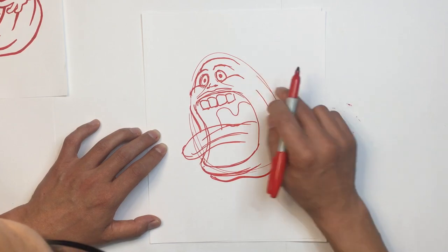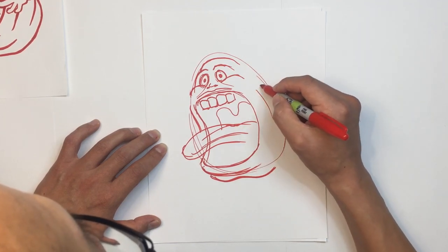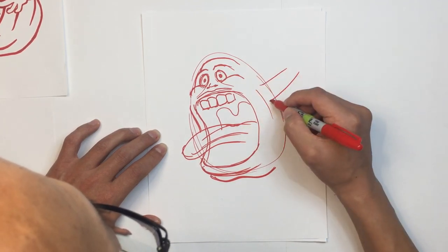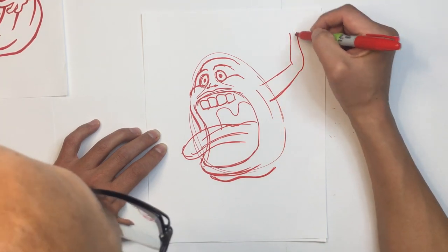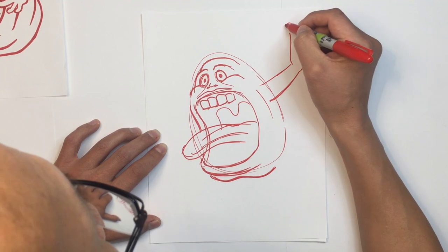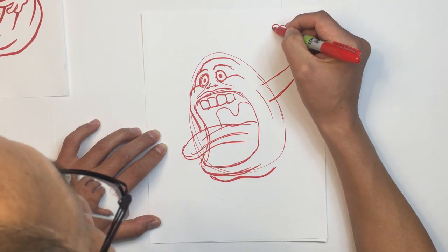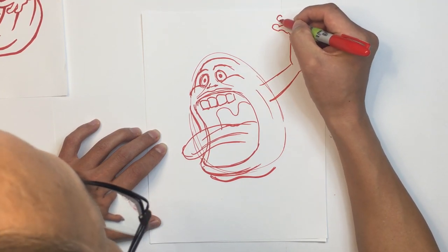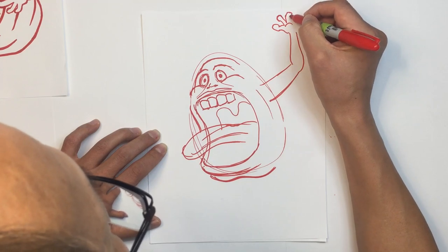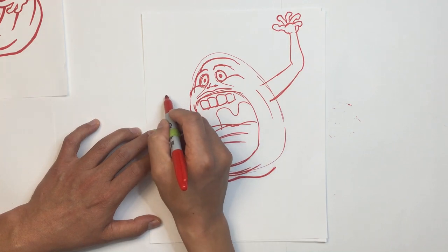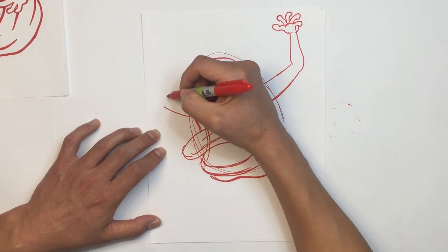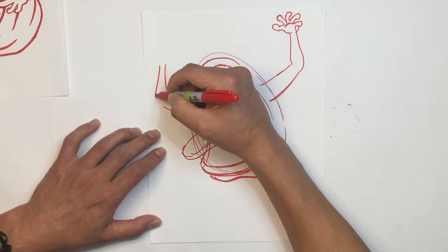So now I'm going to have his arms sort of extending up and out. Again, he's got a bit of a flabby arm. Skinny forearm. And then, a big hand. Big fingers that he's got. I don't worry too much about the finger details. You can go in and clean that up later.